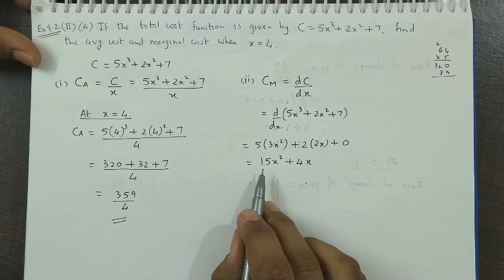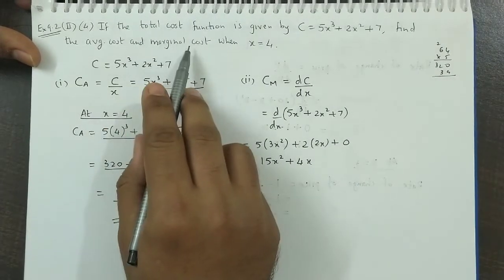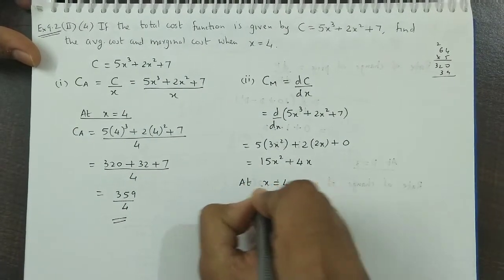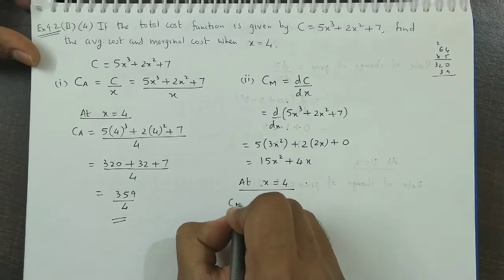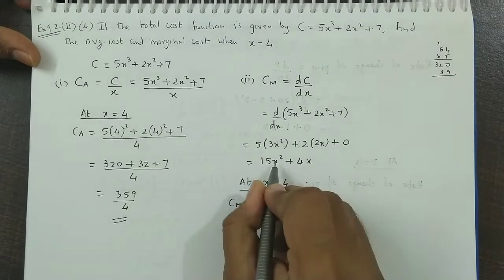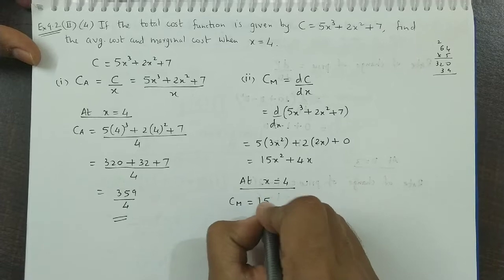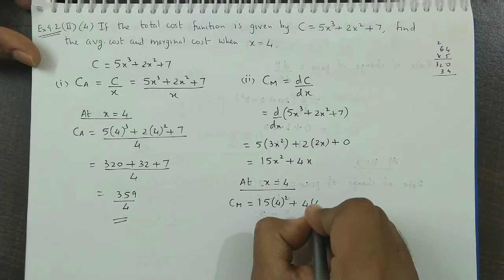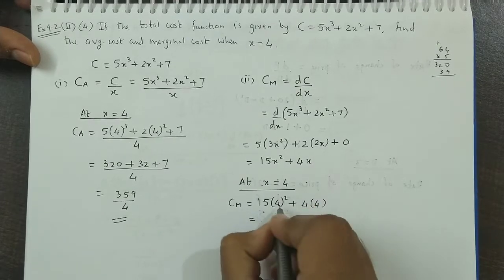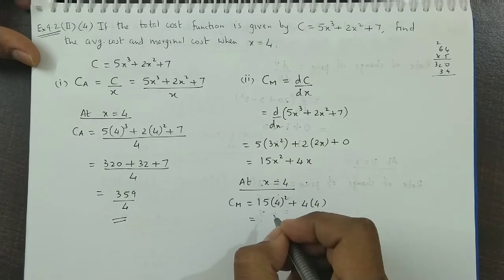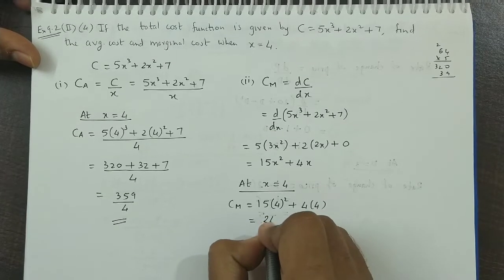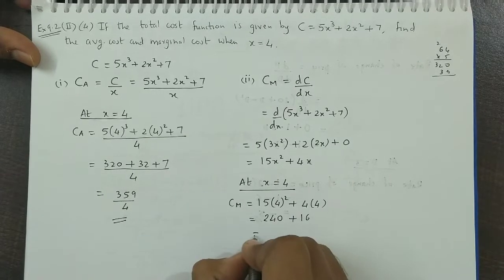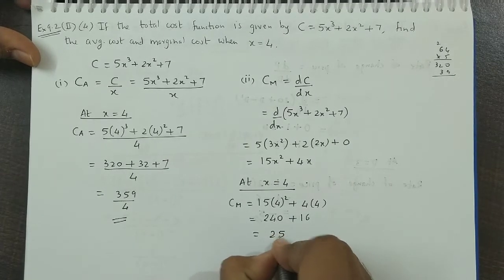Now marginal cost. But again we have to find marginal cost when x is 4. So we say that at x = 4, marginal cost is equal to... now we substitute 4. 4 substitute. So 15 × 4² + 4 × 4. 15 × 16, this is 240, and this is 16. So marginal cost is 256.